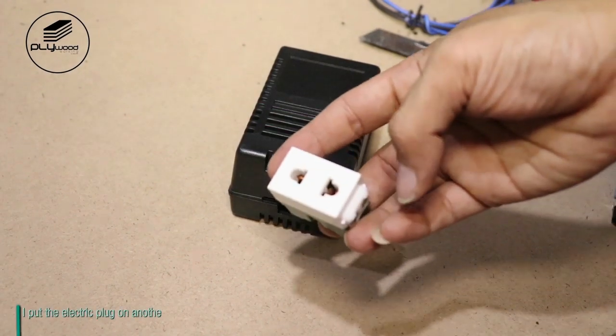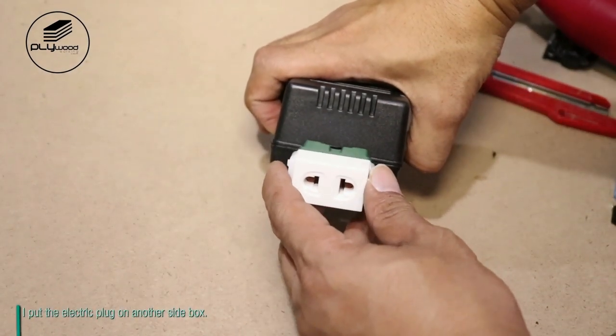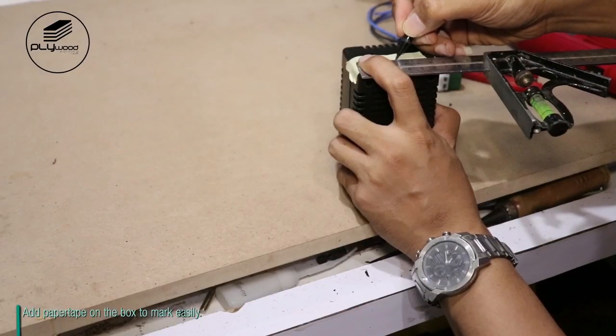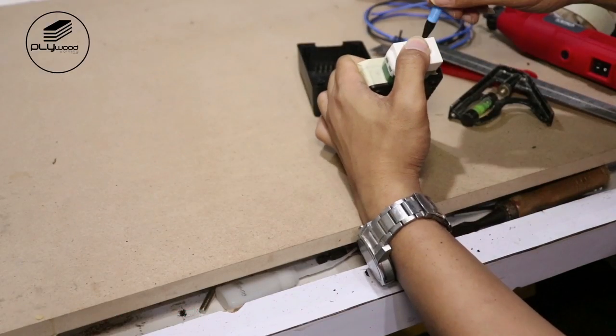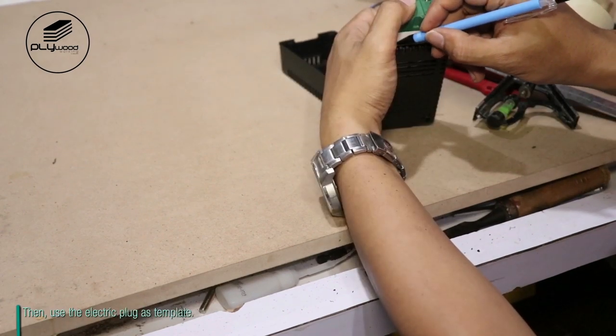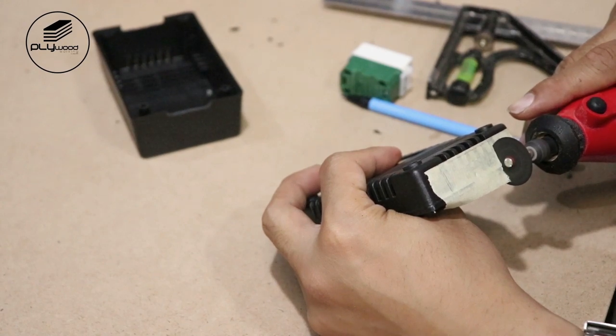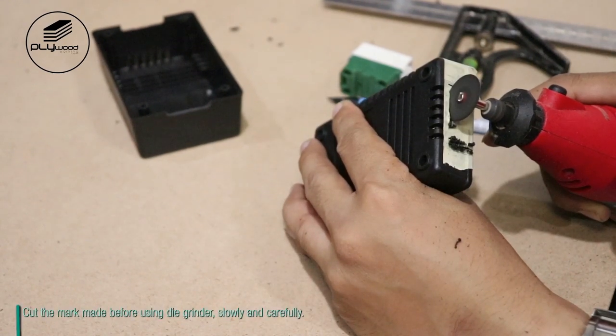I put the electric plug on another side of the box. Add paper tape on the box to mark easily. Then use the electric plug as a template. Cut the mark made before using the die grinder.